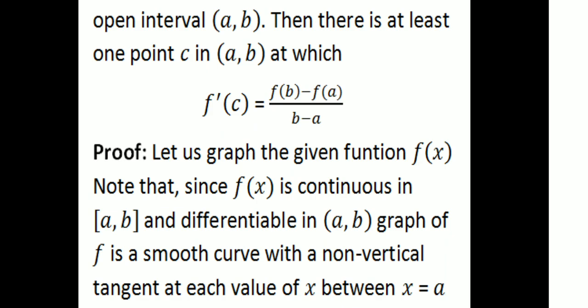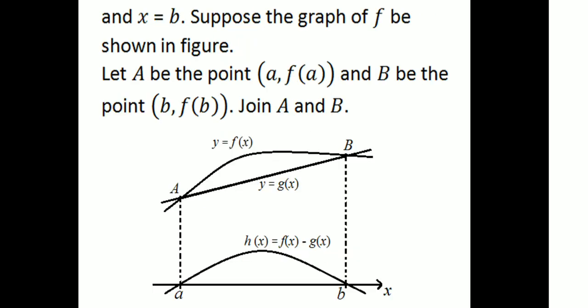Now let us graph the given function f(x). Since f(x) is continuous on closed interval [a, b] and differentiable on open interval (a, b), the graph is a smooth curve. The function is continuous and differentiable on (a, b), giving a smooth curve with non-vertical tangent at each point between x = a and x = b.